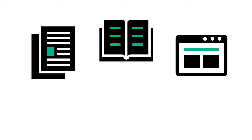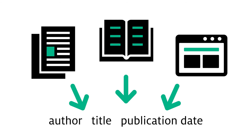This might be confusing at first, but all of these styles have the same basic elements to help you find the source. Regardless of whether it's a citation for an article, a book, or a web page, they will include the author, title, and publication date, but there may be other information as well that will help you find the source.